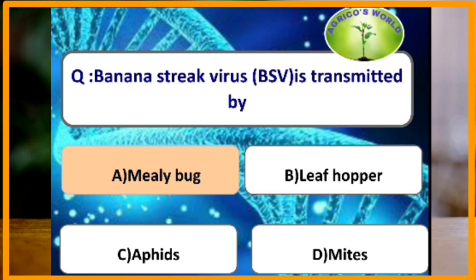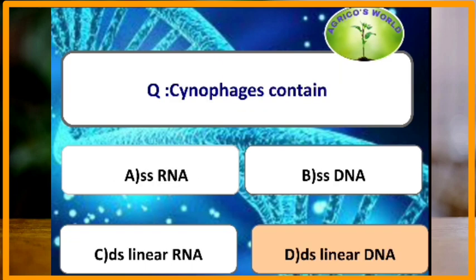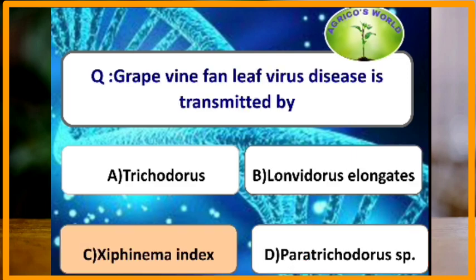Banana streak virus, along with cocoa swollen shoot virus and cocoa mottle leaf virus, are all transmitted by mealybug. Banana streak virus is under the genus Badnavirus. Cyanophages are viruses that infect cyanobacteria and have double-stranded linear DNA.